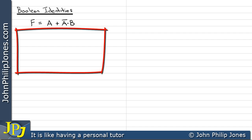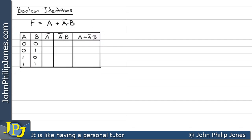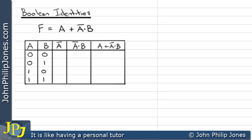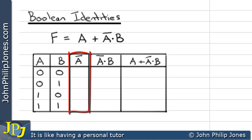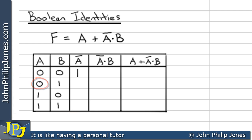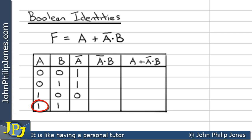Let's draw the truth table. We have the incomplete truth table and I'm now going to see what goes in each column, starting with the NOT A column. When A is 0, NOT A will be 1. When A is 0 again, NOT A is 1. When A is 1, NOT A is 0. And in the final row, A is 1 so NOT A is 0.